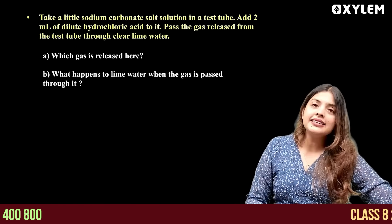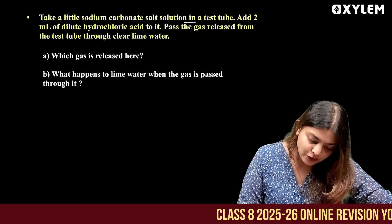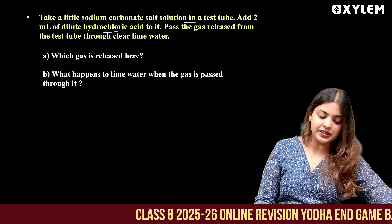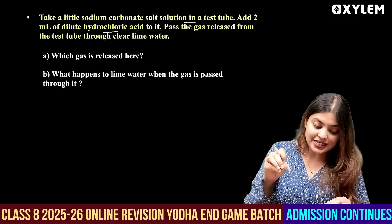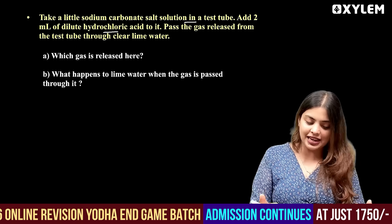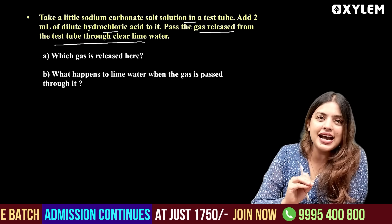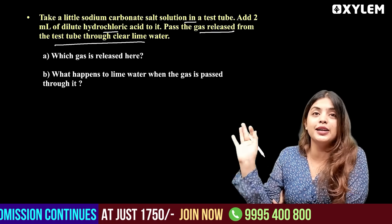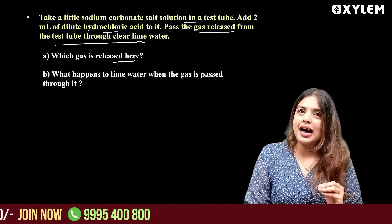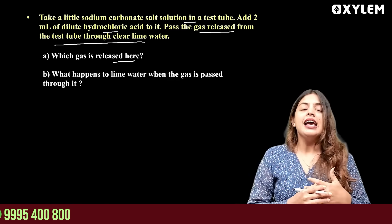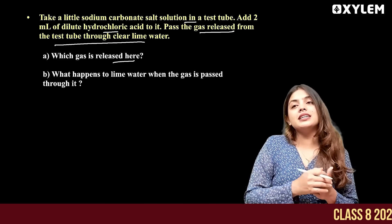Take a little sodium carbonate salt solution. Add 2 ml of dilute hydrochloric acid to it. Pass the gas released from the test tube through clear lime water.